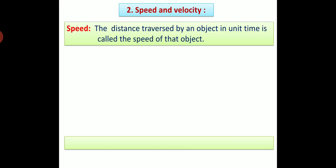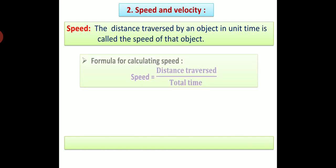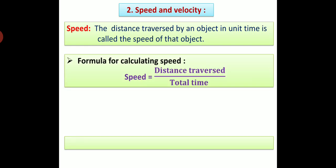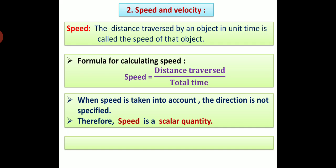Next concepts: speed and velocity. Speed: The distance traversed by an object in unit time is called the speed of that object. The formula for calculating speed is: speed equals distance divided by total time. When speed is taken into account, the direction is not specified. Therefore, speed is a scalar quantity.